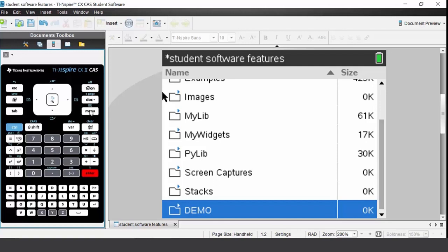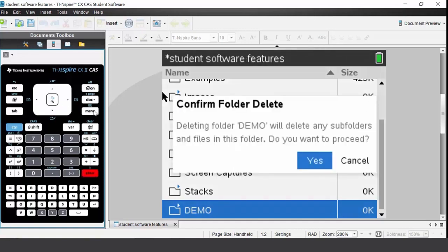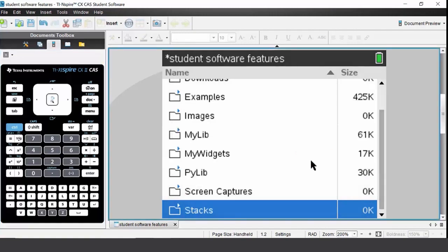If you want to remove that folder, press ctrl followed by menu, come down to delete option 6, confirm folder delete. Yes I do want to delete it, and that folder is now deleted.